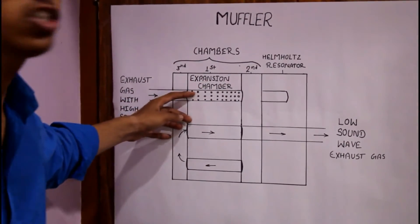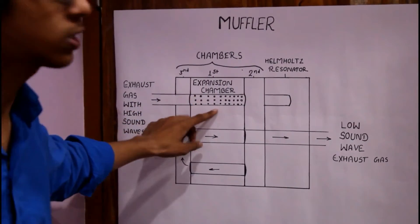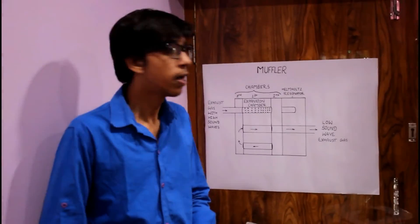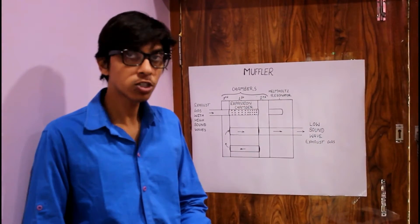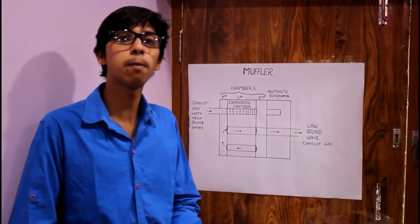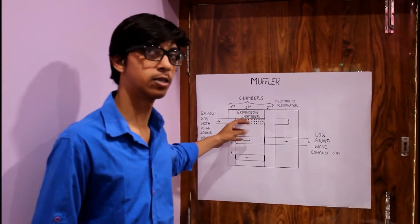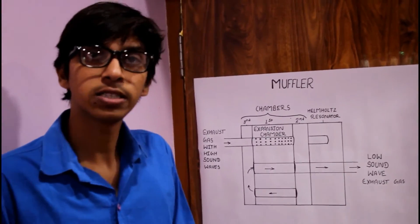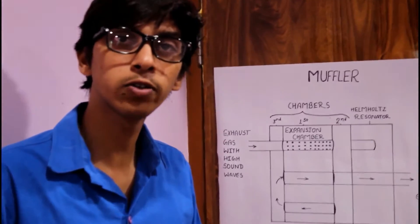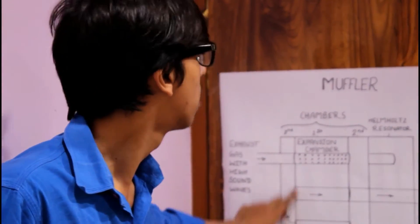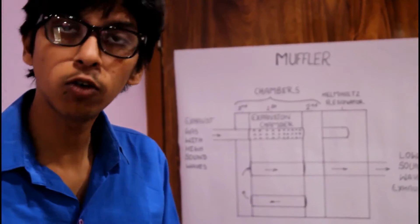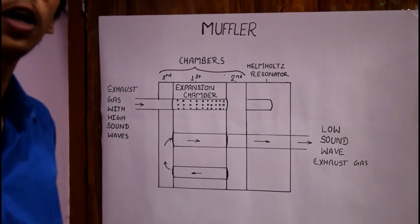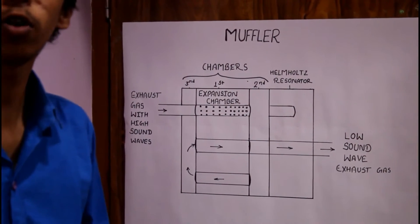In the expansion chamber pipe, small holes are present through which the exhaust gases come out into the expansion chamber. Because of the high pressure, some amount of the gases are reversed in this pipe, but some gases come out through these holes into the expansion chamber. These high sound wave exhaust gases collide with the walls, and due to friction the sound waves collide with each other and are reduced. The high sound waves are converted into a low amount of sound waves.